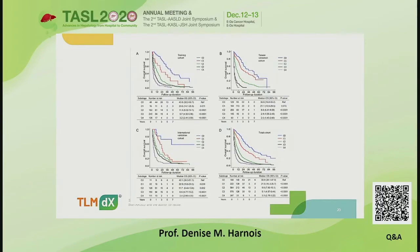This demonstrates the variability seen in overall survival in the Training Cohort, the Taiwan Validation Cohort, the International Validation Cohort, and the Total Cohort together when patients are divided through the sub-staging of BCLC stage C. C0 is represented in blue, C1 in red, C2 in green, C3 in black, and C4 in purple. You can see the variability of survival based on the sub-staging system.